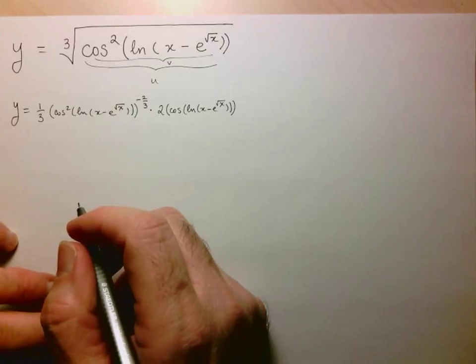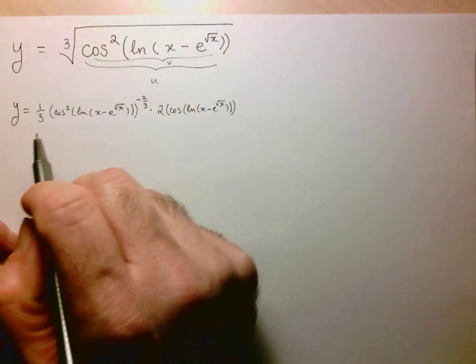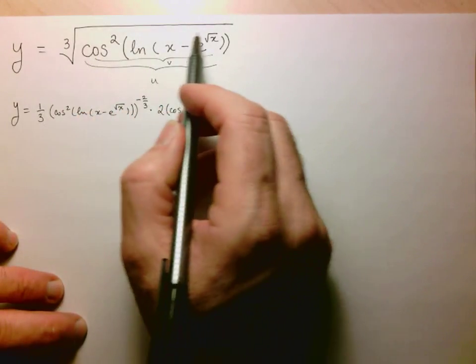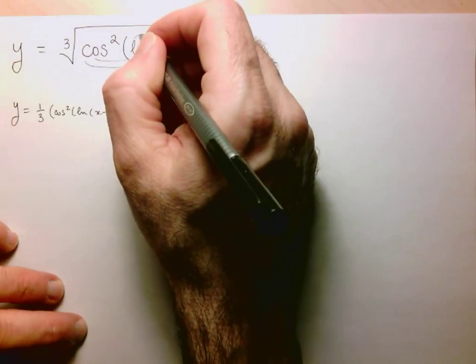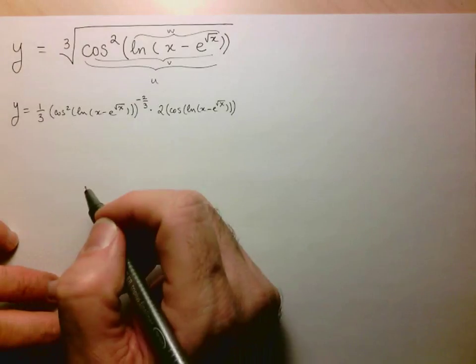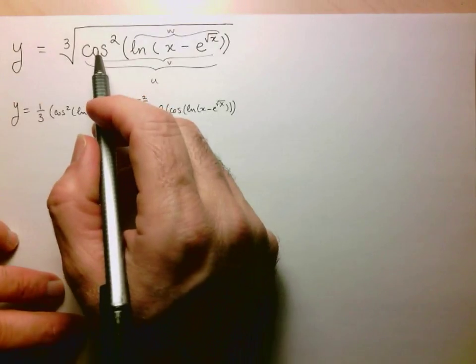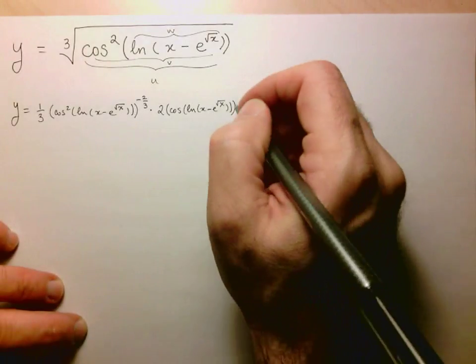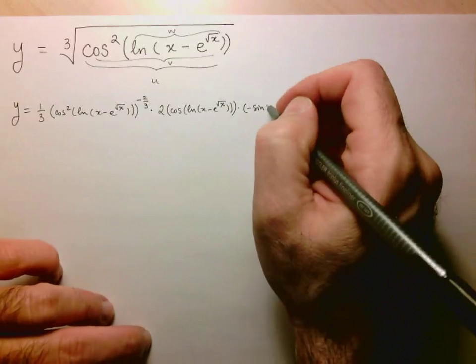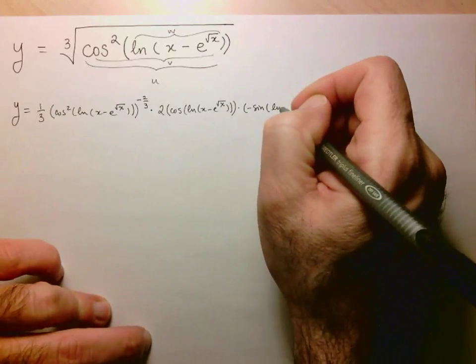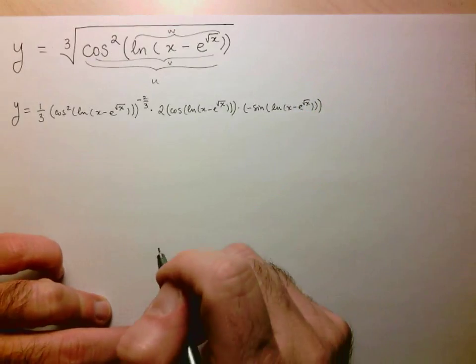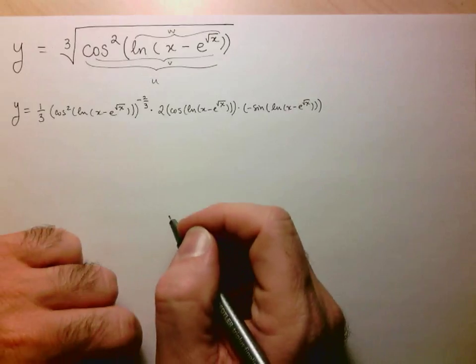Now I have to take the derivative of this v function, which is cosine of this expression here. I'm going to make this expression inside the cosine my, I guess I got to go to w. What is the derivative of cosine of w? It's just negative sine w. So I'm multiplying by negative sine of w, which is just ln(x - e^√x).